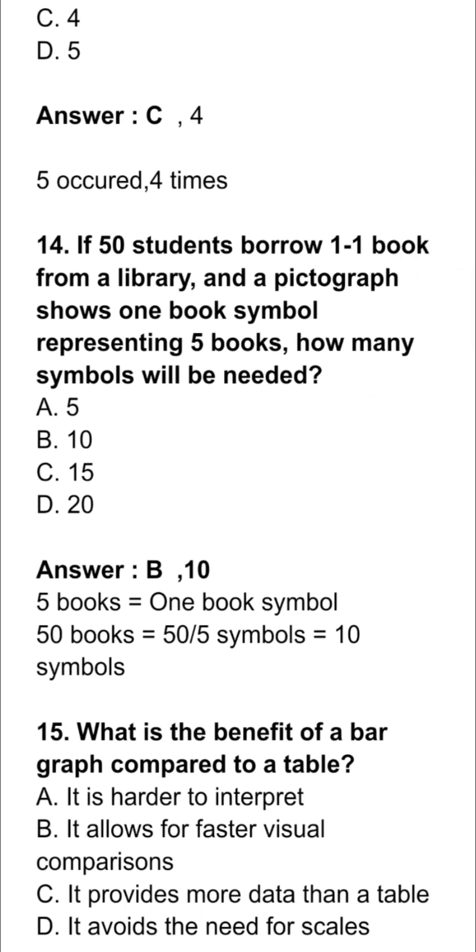Question 14. If 50 students borrow 1-1 book from a library and a pictograph shows 1 book symbol representing 5 books, how many symbols will be needed? Option B is correct. 10. 5 books represented by 1 book symbol. It means 50 books will be represented by 50 upon 5, that is equals to 10 symbols.